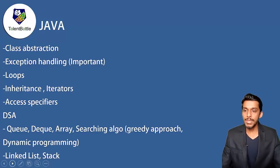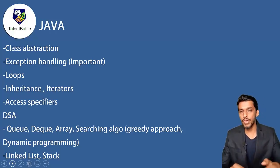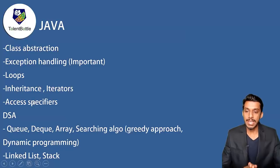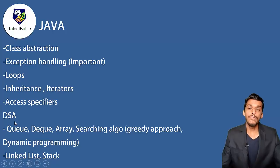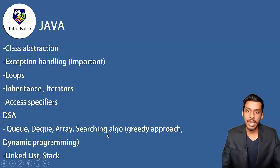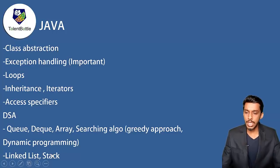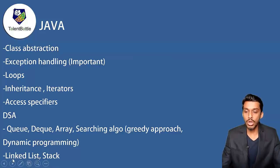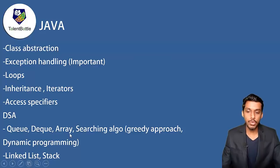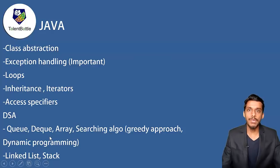For Java, focus on class abstraction and exception handling — these are important because one or more questions were asked. Also covered are loops, inheritance, iterators, and access specifiers. Combinations of loops, class abstraction, and inheritance were used to increase difficulty. There will also be questions based on DSA: important data structures like queue, deque, array, and searching algorithms. There were questions on greedy approach, dynamic programming, linked list, and stack. Note that in last year's Java papers there were basically no questions on linked list and stack, but since there is a chance they will appear this time, you cannot omit them. Focus on queue, deque, array, searching algorithms, and be prepared for linked list and stack as well.